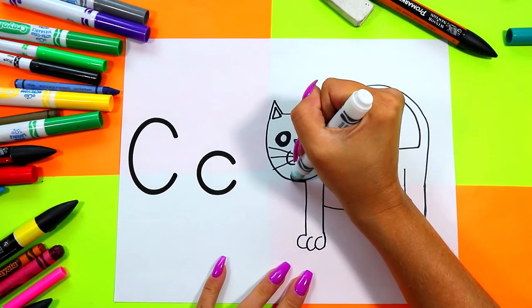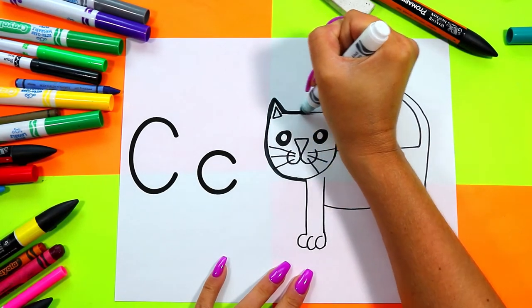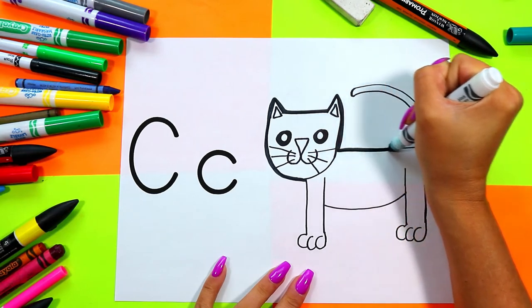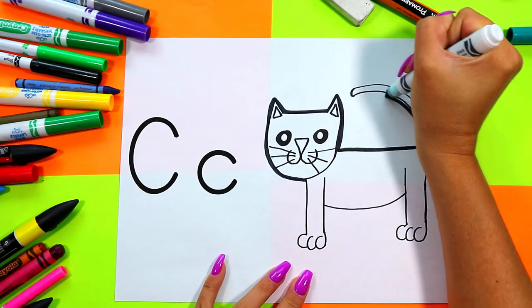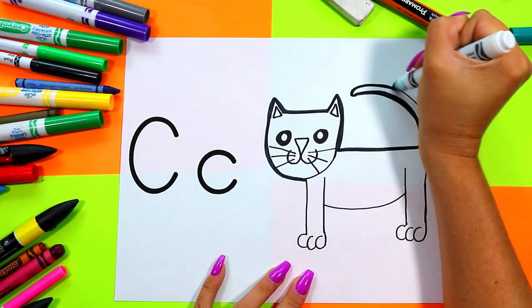Once you're done, find beautiful colors and art making mediums of your choice that you want to use to color in your lovely cat, which is starting with the letter C. The letter C is the first letter in the word cat. C is for cat.